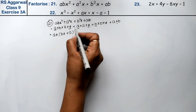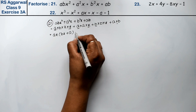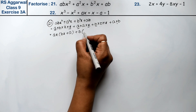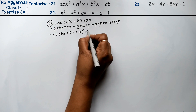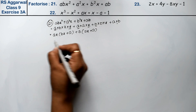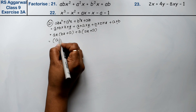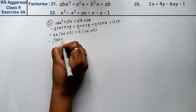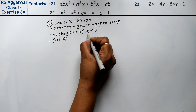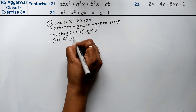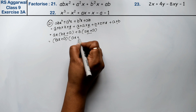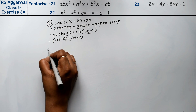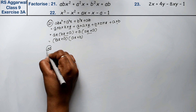Then taking b common from the other two, b is common and bx plus a remains. So the factors are: bx is common, bx plus a is common in both — so what remains is ax plus b. The answer is (bx + a)(ax + b). Let's do question number 22.